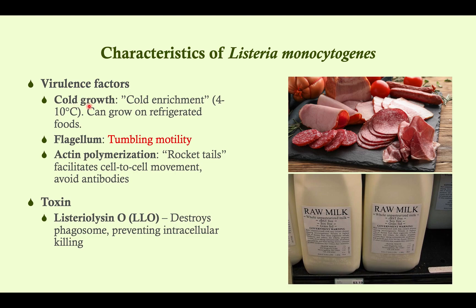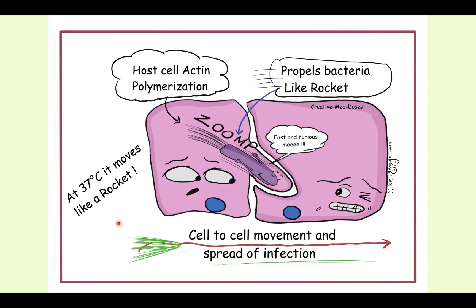To summarize: Listeria grows in the cold and in refrigerated foods including deli meats, raw milk, and fresh cheeses. It has flagella causing tumbling motility, and inside the cell it polymerizes actin to facilitate cell-to-cell movement, helping it avoid antibodies. Listeriolysin O destroys the phagosome and prevents intracellular killing. Notice in the cartoon: at 37 degrees it moves like a rocket, using actin-based rocket tails.